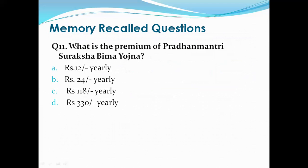Question 11: What is the premium of Pradhan Mantri Suraksha Bima Yojana? Options are: 12 rupees per year, 24 rupees yearly, 118 rupees yearly, 330 rupees yearly. The right answer is A, that is 12 rupees yearly. The premium for Pradhan Mantri Suraksha Bima Yojana is 12 rupees per year. In comparison, Pradhan Mantri Jeevan Jyoti Bima Yojana has a premium of 330 rupees yearly.